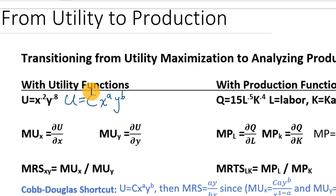What matters with utility is that whatever somebody prefers more, we assign a higher number. So if I like basket A better than basket B, it doesn't matter whether we call basket A 100 utils or 10, as long as we give basket B a smaller number. That constant doesn't really matter because utils don't exist in the real world — they're just an imaginary way to measure what makes someone happier. It's kind of like currency: it doesn't matter whether we measure value in yen or dollars; if someone makes more yen than someone else, they really make more money.